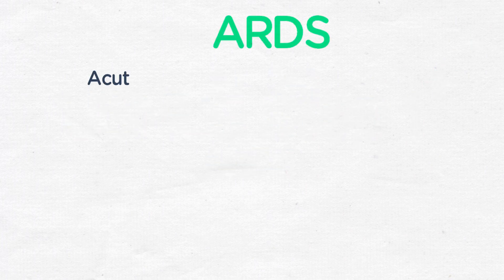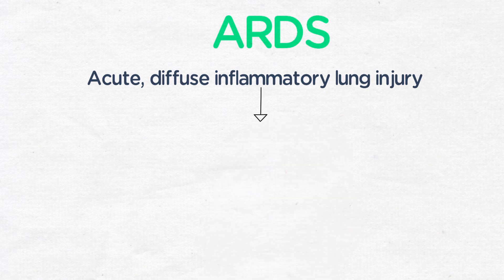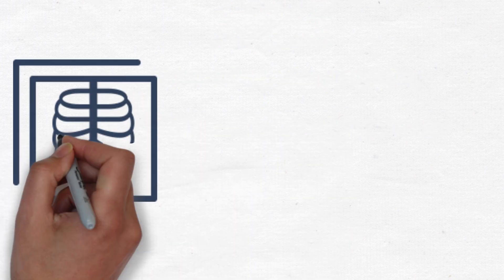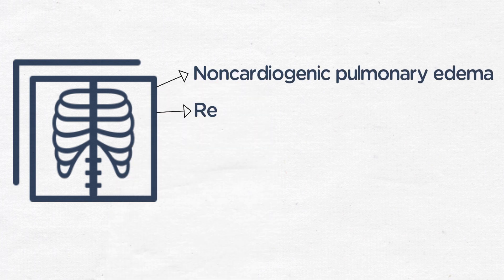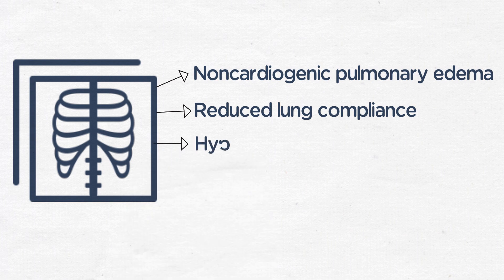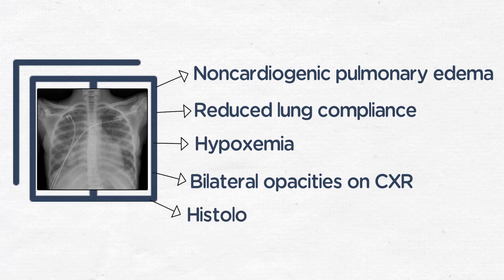ARDS is an acute, diffuse inflammatory injury of the lungs that results in widespread increased pulmonary vascular permeability and leakage of fluid. This results in non-cardiogenic pulmonary edema with decreased lung compliance, loss of aerated lung tissue, hypoxemia, and the classic chest x-ray findings of bilateral coalescent opacities as seen here in this chest x-ray. Histological findings include diffuse alveolar damage and hyaline membrane formation.